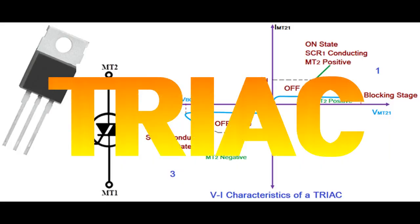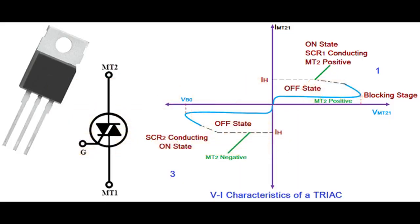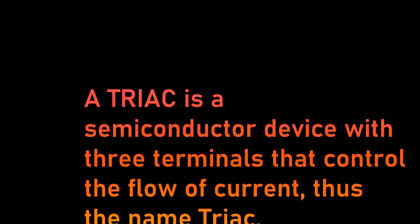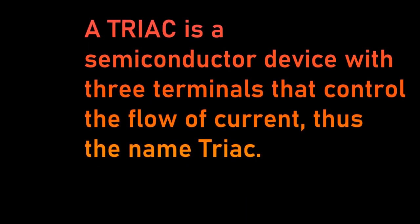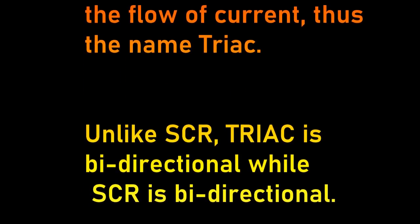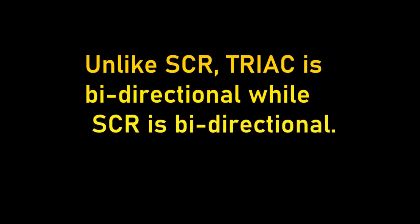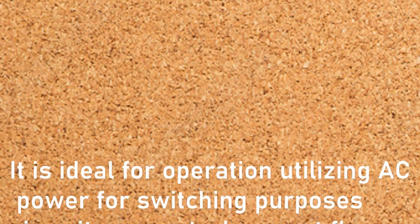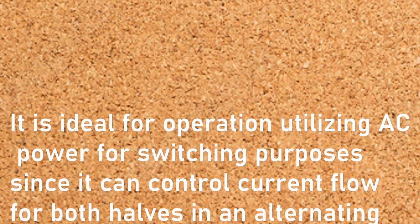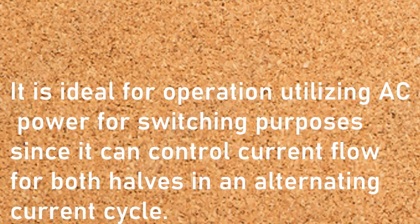The term TRIAC stands for triode for alternating current. A TRIAC is a semiconductor device with three terminals that control the flow of current, thus the name TRIAC. Unlike SCR, TRIAC is bi-directional while SCR is uni-directional. It is ideal for operation utilizing AC power for switching purposes since it can control current flow for both halves in an alternating current cycle.